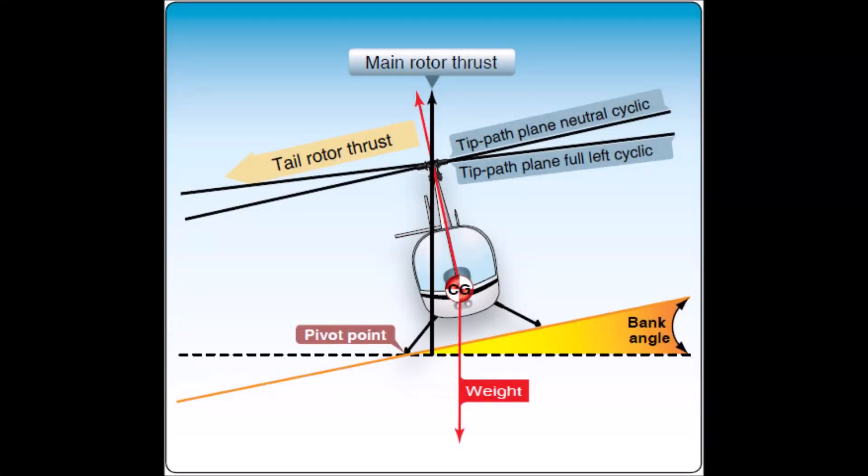So let's talk about it. A helicopter is susceptible to a lateral rolling tendency called dynamic rollover when it is in contact with the surface during takeoff and landings.